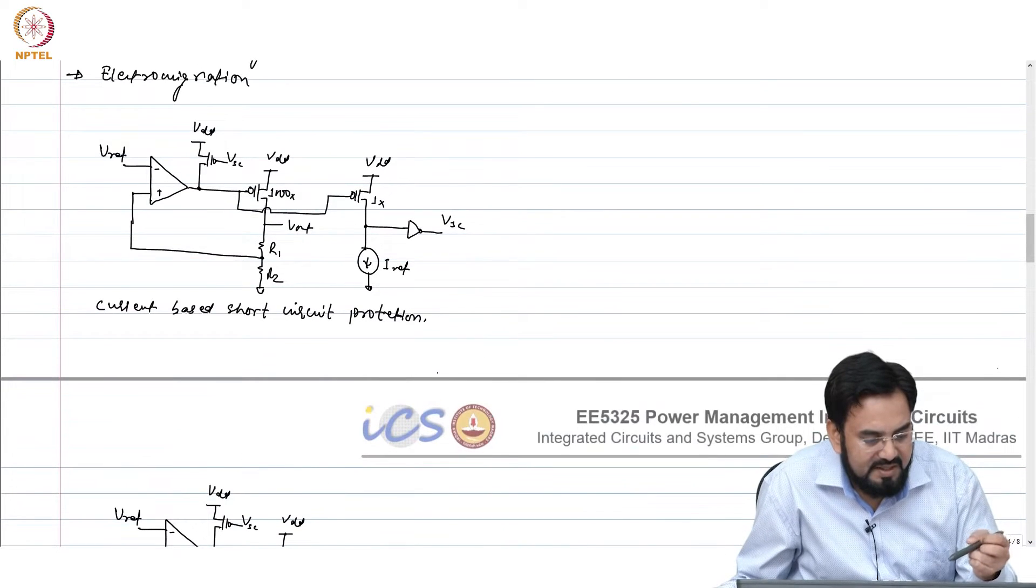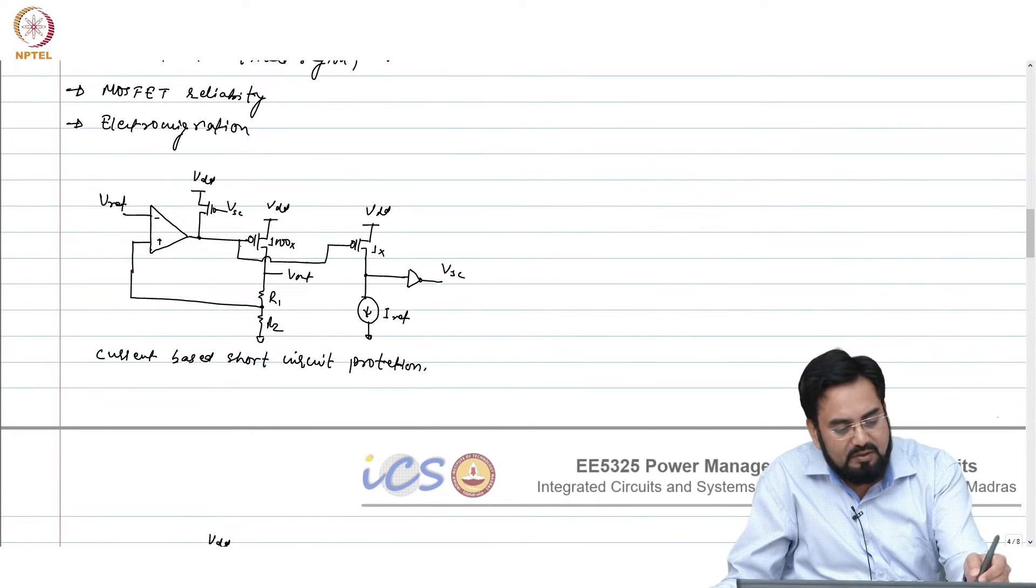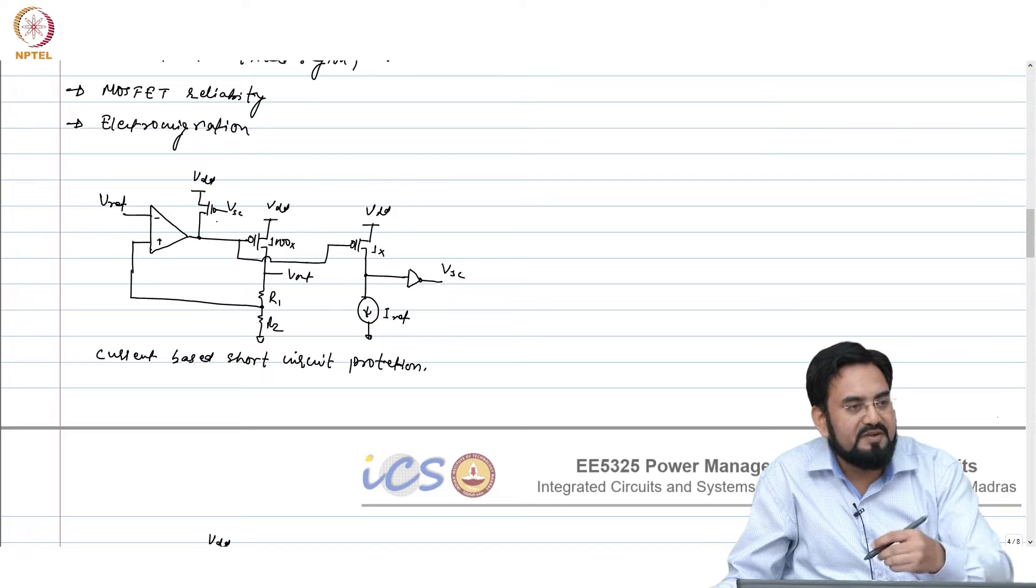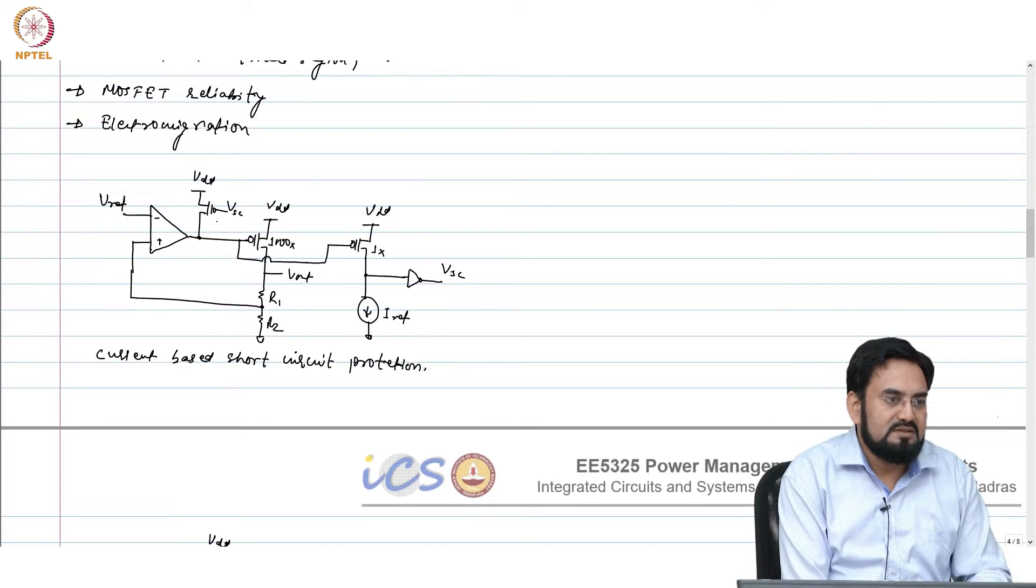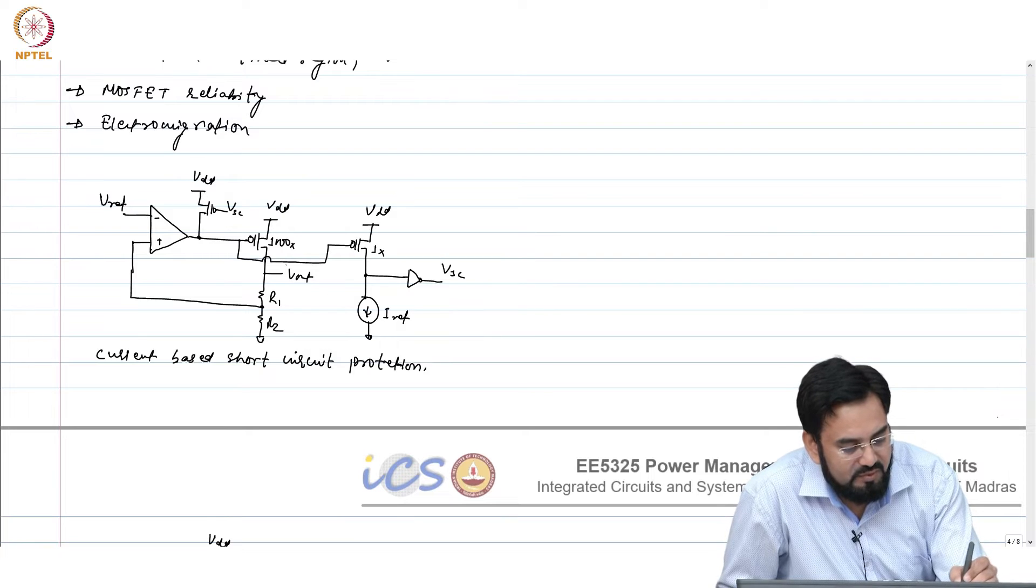This voltage based protection may trigger your MOSFET earlier compared to the current based. The reason is the current will only change when your feedback response. When you start drawing the load current, what will happen?